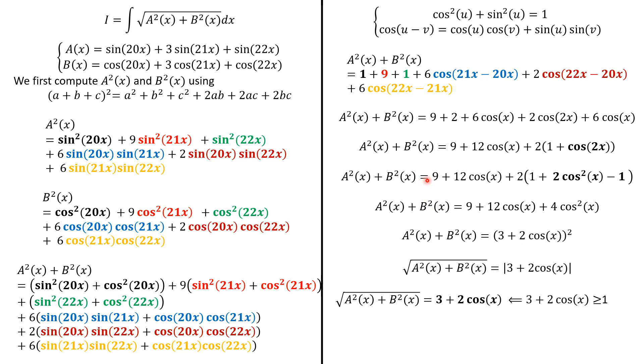And now, it is straightforward. So, this antiderivative is going to be 3x + 2sin(x) + C. And we're done. And this is the answer.